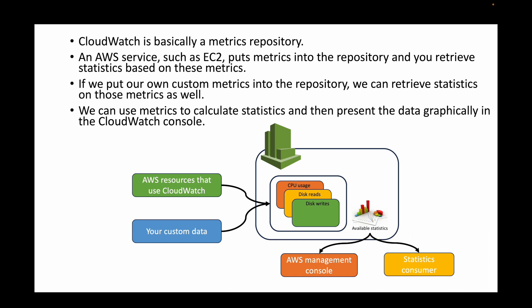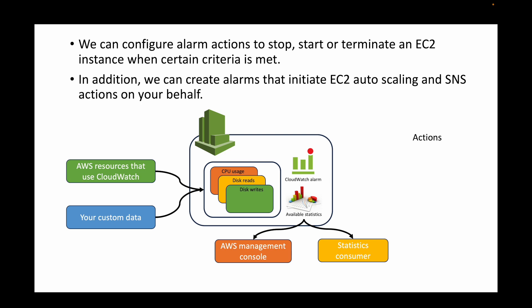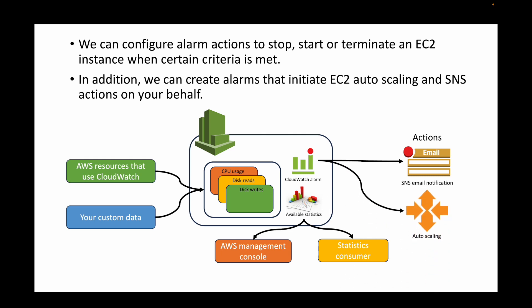We can view dashboards in the management console or use a statistics consumer to display them. All metrics are pushed to the repository, statistics are calculated, and then pushed out as dashboards where we can visualize the data and understand how resources are running over a period of time. In addition, we can configure CloudWatch alarms to take actions — like starting or terminating instances whenever a threshold or criteria is met. For example, we can create alarms to send email notifications using the SNS service, or trigger auto scaling groups to launch or terminate instances on our behalf.